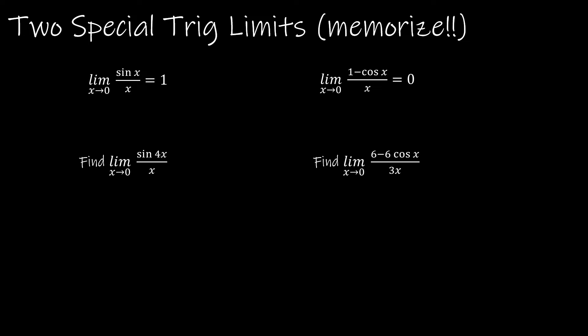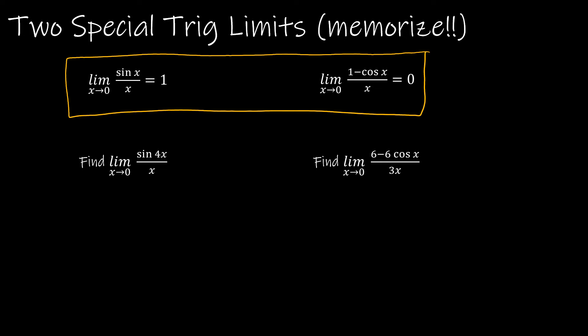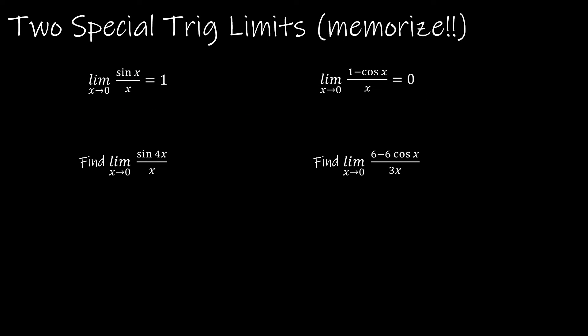Before we finish this section, I want you to memorize these two special trig limits — they come up much more often than you'd think and are great tools to have. The limit as x approaches 0 of sine x over x equals 1, and the limit as x approaches 0 of 1 minus cosine x over x equals 0. Both produce indeterminate forms under direct substitution, which is why they belong in this section.